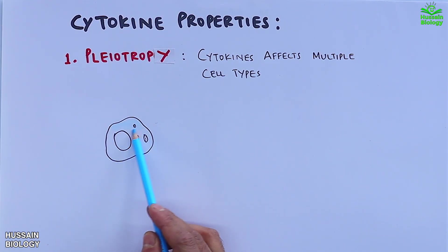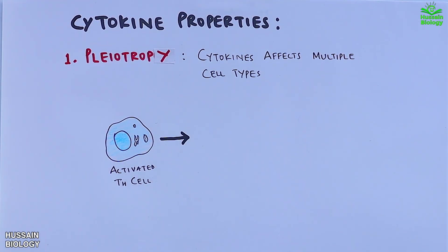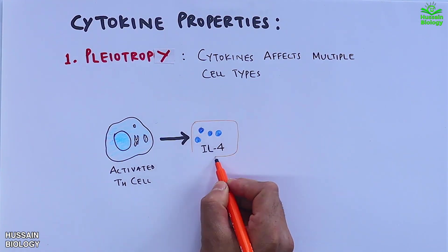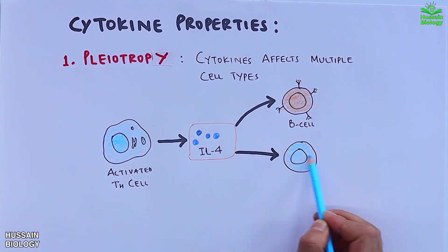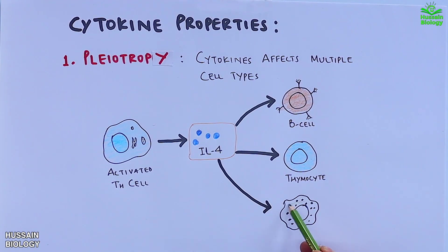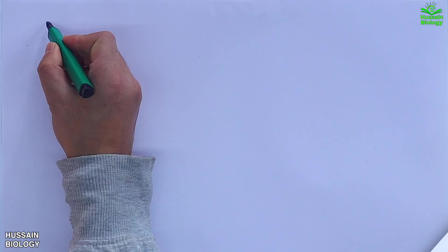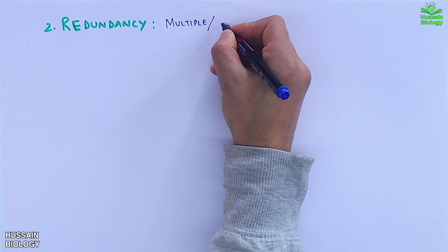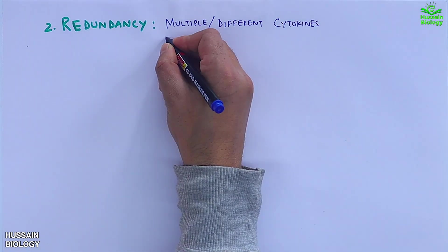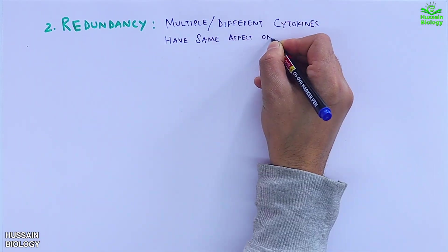Furthermore, if we see cytokine properties, the first one is pleiotropy, where one kind of cytokine molecule affects multiple cells. Here in the diagram, the activated T helper cell releases interleukin-4. This interleukin-4 can target B cells, thymocytes, and mast cells, thus exhibiting the pleiotropic effect.